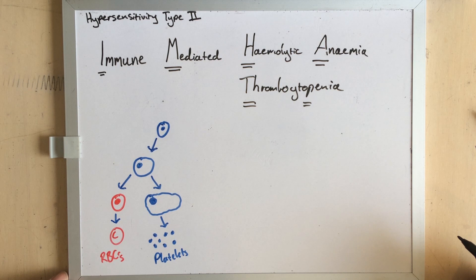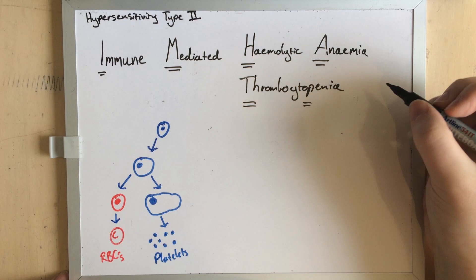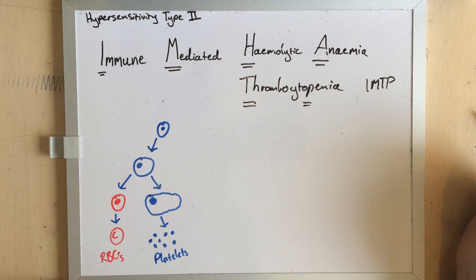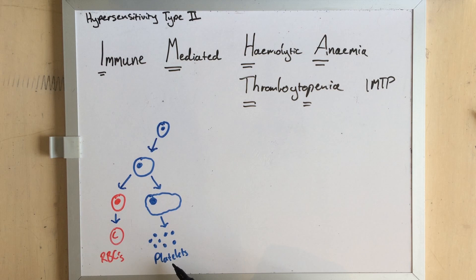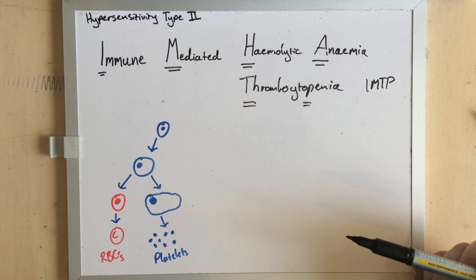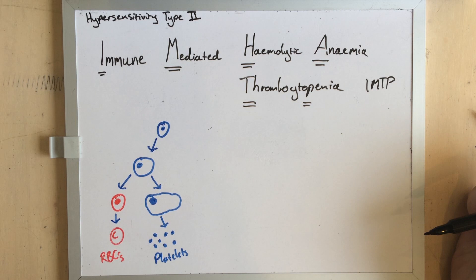There is another very similar condition with a nearly identical process called immune-mediated thrombocytopenia, or IMTP for short. Thrombocytes are a fancy name for the platelets, and they're produced by megakaryocytes. These cells come from the same stem cell line as the red blood cells and can be targeted by the same accidental process that occurs in IMHA, resulting this time in a clotting disorder.